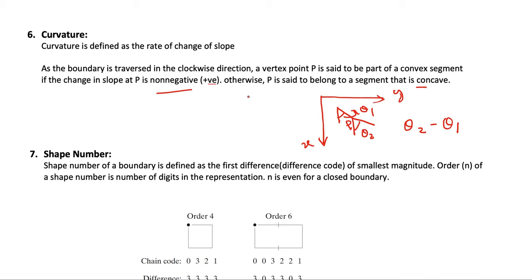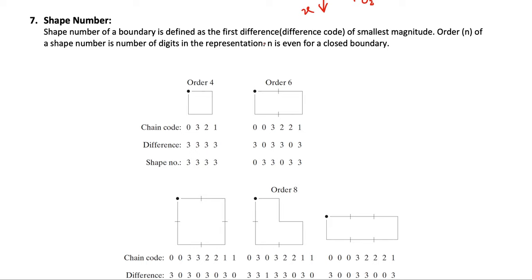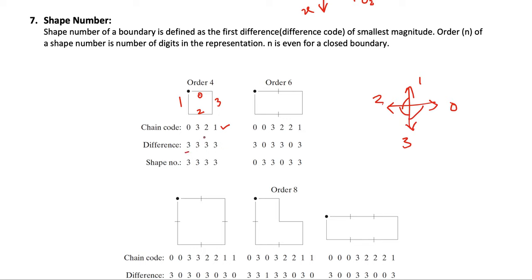The shape number of a boundary is defined as the first difference code of smallest magnitude. For example, using a four-directional chain code on a boundary gives a code such as 0, 3, 2, 1. The difference code is calculated by counting the number of directional changes needed to go from one direction to the next on the chain code. For instance, to go from 1 to 0 requires 3 directional changes, and from 0 to 3 also requires 3 changes.